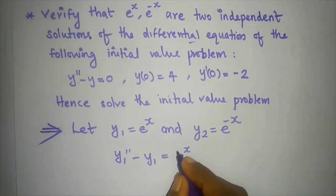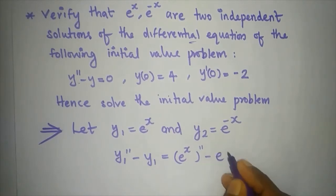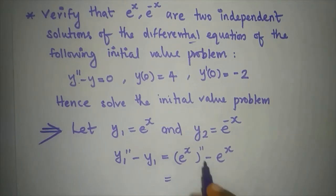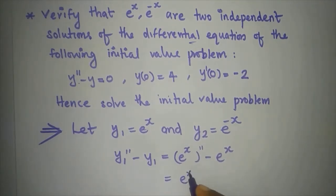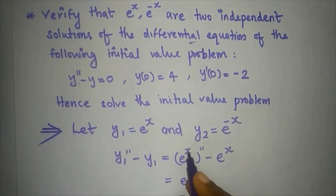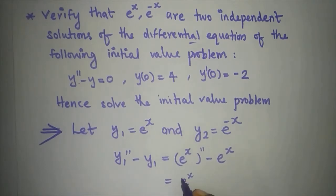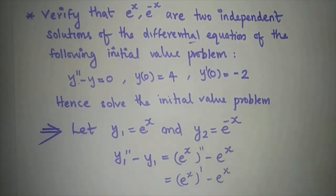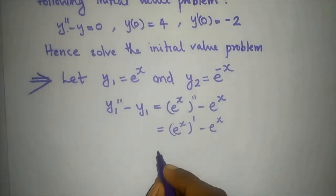So y1 = e^x. The derivative of e^x is e^x, and the second derivative is also e^x. So y1'' minus y1 equals e^x minus e^x, which equals 0. So y1 satisfies the equation.